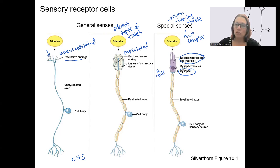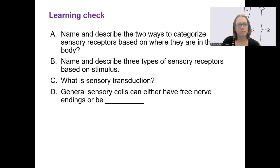So neurotransmitter would be released from, you can see them right there, synaptic vesicles. Neurotransmitter released.